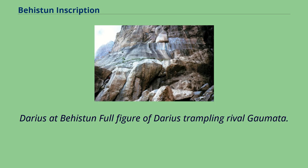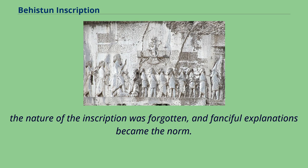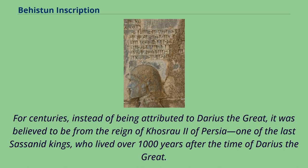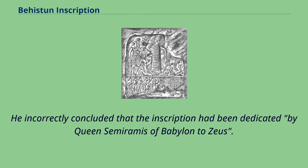After the fall of the Persian Empire's Achaemenid dynasty and the lapse of Old Persian cuneiform writing into disuse, the nature of the inscription was forgotten and fanciful explanations became the norm. For centuries, instead of being attributed to Darius the Great, it was believed to be from the reign of Khosrau II of Persia, one of the last Sassanid kings, who lived over 1,000 years after the time of Darius the Great. The inscription is mentioned by Ctesias of Cnidus, who noted its existence around 400 BC and mentioned a well and a garden beneath it, though he incorrectly concluded it had been dedicated by Queen Semiramis of Babylon to Zeus.